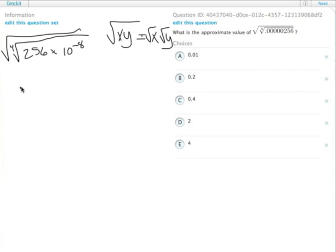So this is the same thing as the fourth root of 256, square root of that, times the fourth root, square root of 10 to the negative eighth.